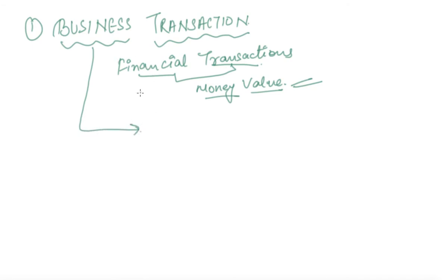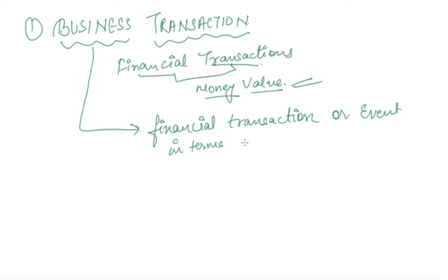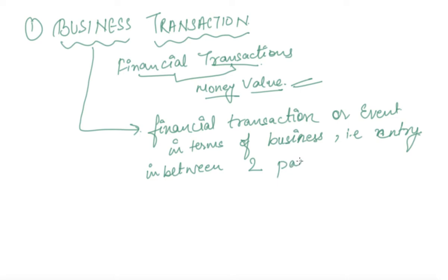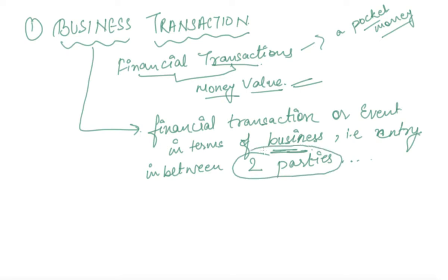But in case of business, we mean business transaction as any type of financial transaction or event, but in terms of business — that is, the entry should take place between two parties. A financial transaction can be, say, pocket money paid by a father to his child. But in case of a business transaction, it should take place between two parties. A father and a son are not two business parties — they are just family members.